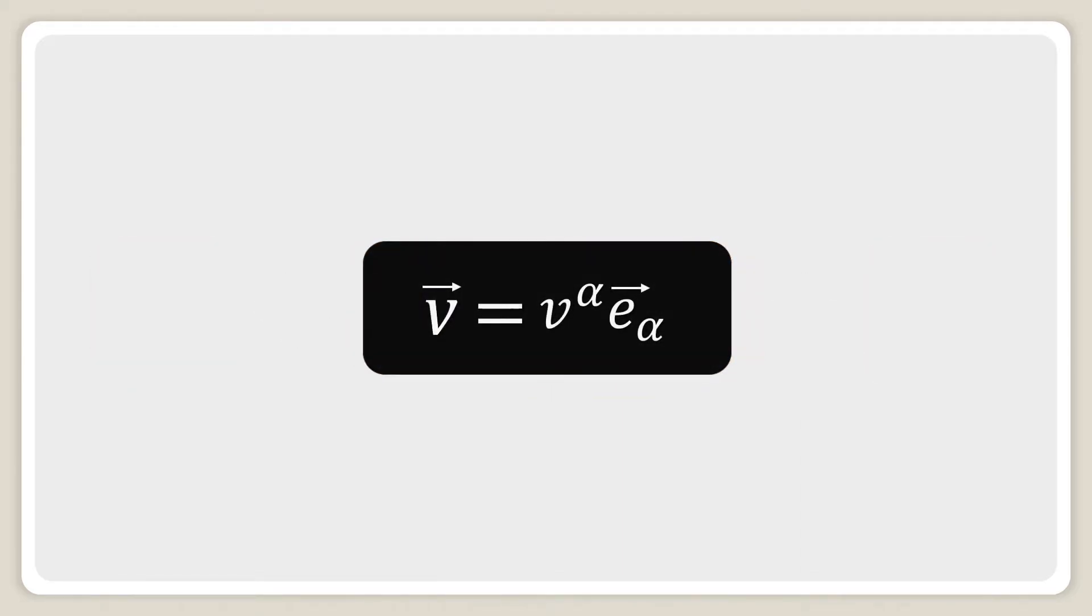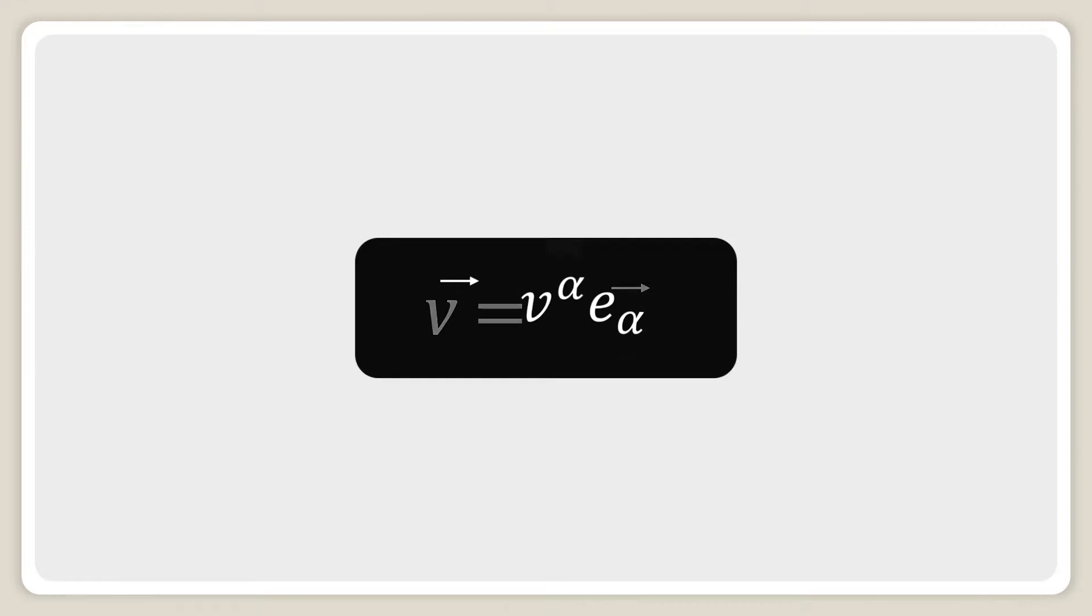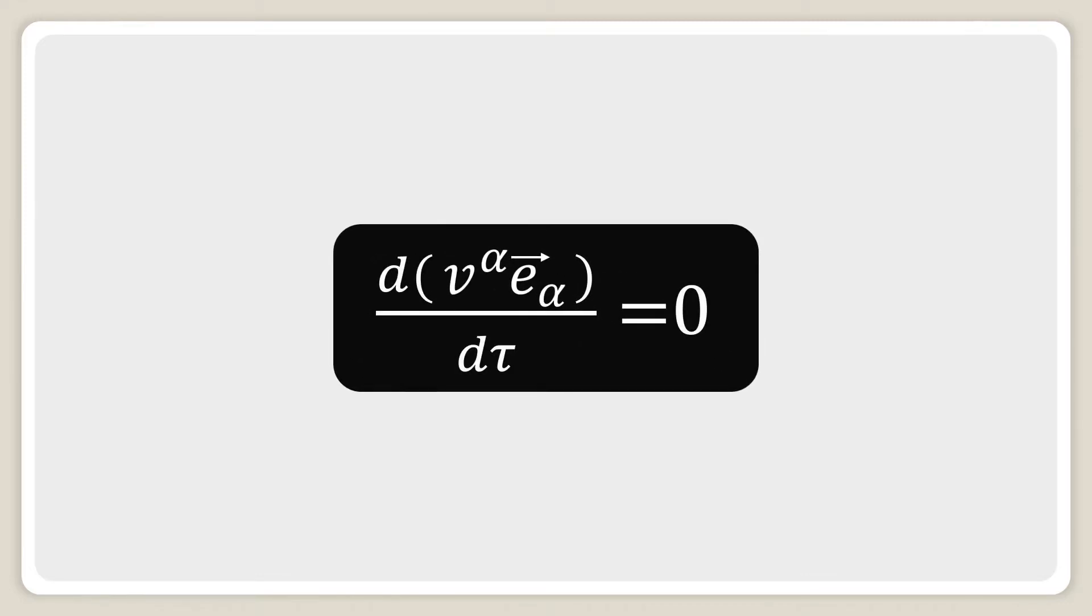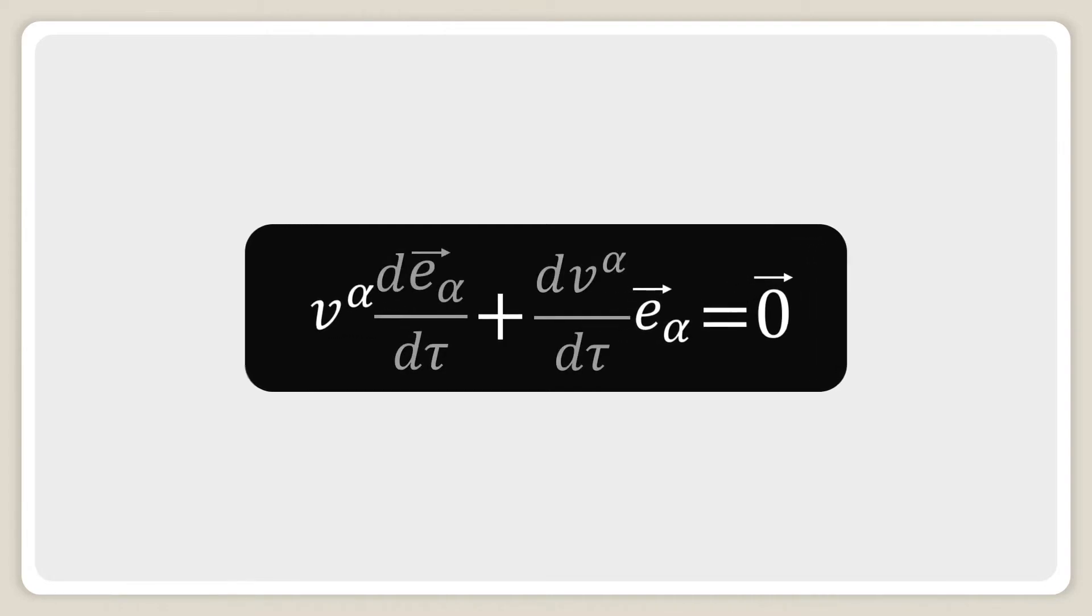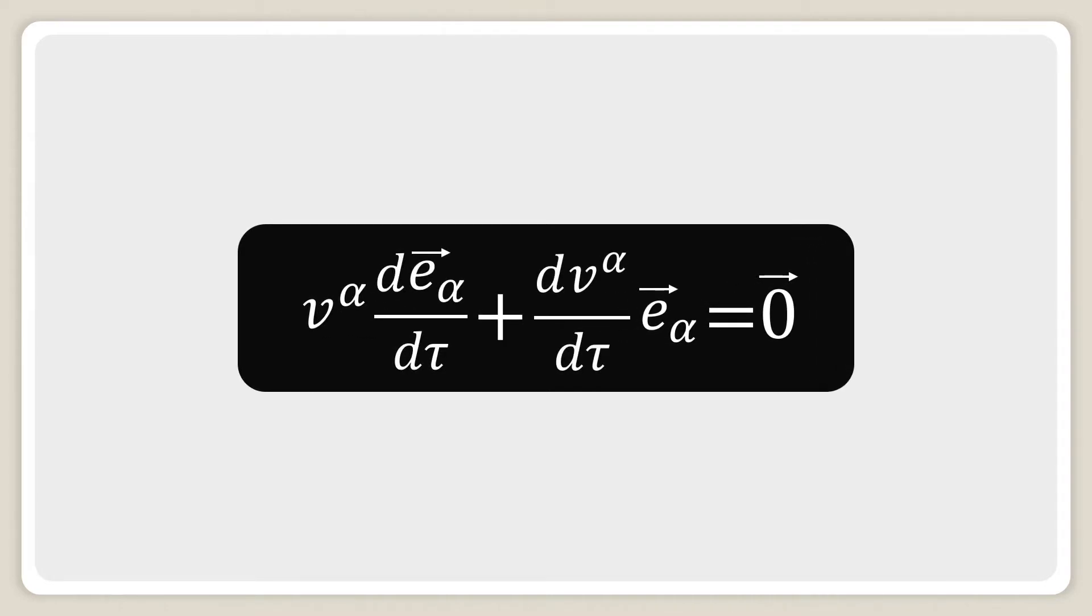Using this expression and knowing that the derivative of the product is the sum of each term multiplied by the derivative of the other term, we obtain a relation between on one side the change in the components of velocity and on the other side the change in the basis vectors themselves.